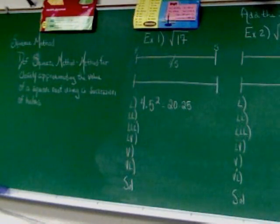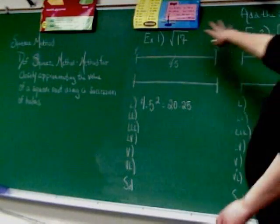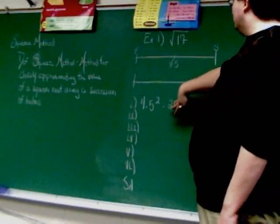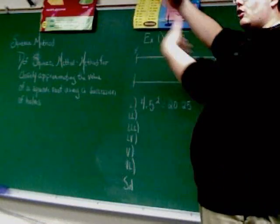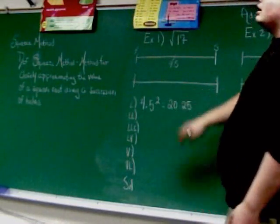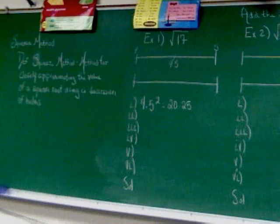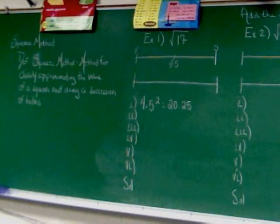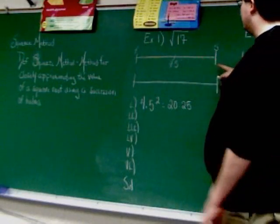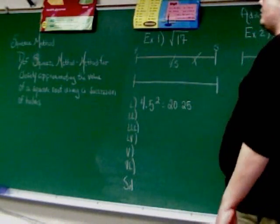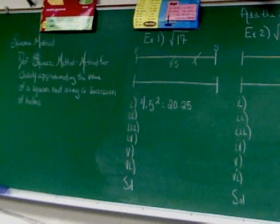Well, 20.25 compared to 17, that's too big. All right? It's bigger than 17. I want to get close to 17. Too big. So logic tells me that anything bigger is only going to get further away. So what I do is I go up to my number line and say, okay, this is too big. Nothing bigger is ever going to work. So I cross out the range of everything bigger.